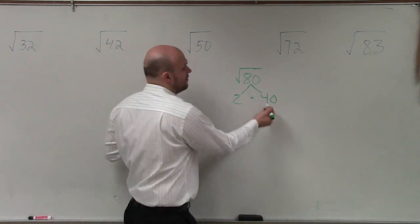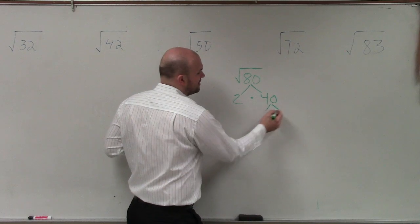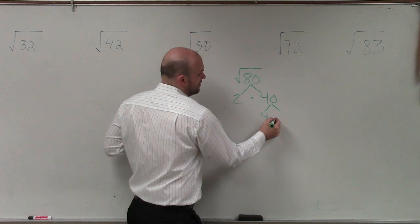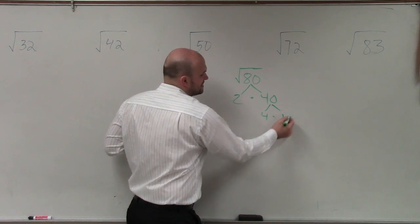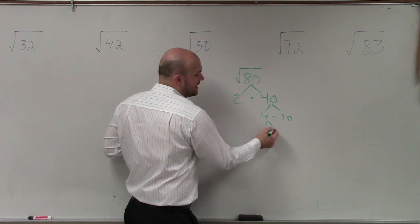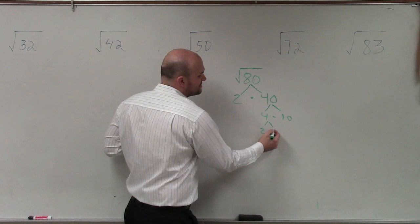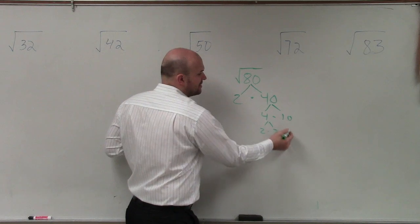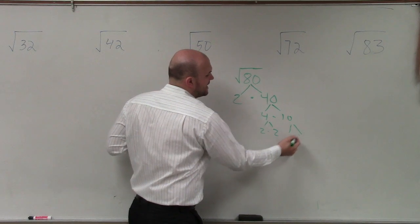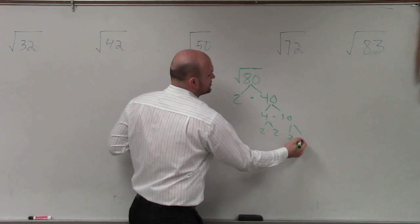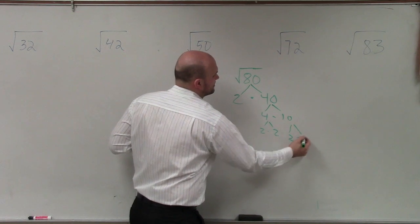So maybe you say, what if I did 4 times 10? Then I could factor 4 down to 2 times 2, and 10 I could factor down to 2 times 5.